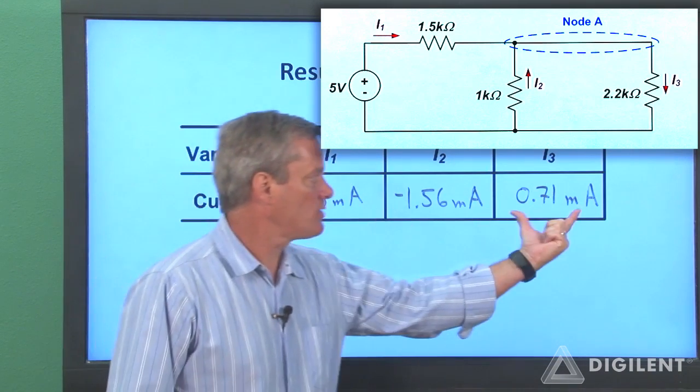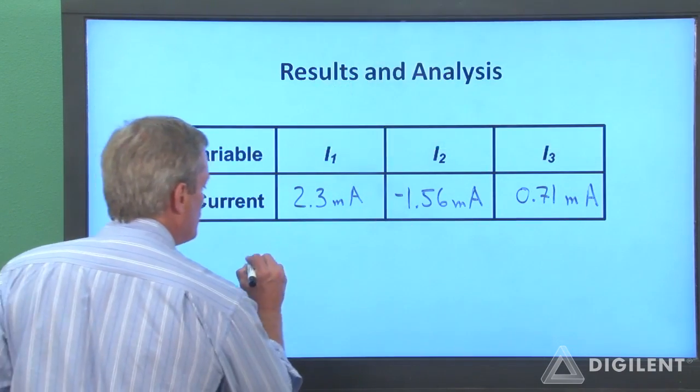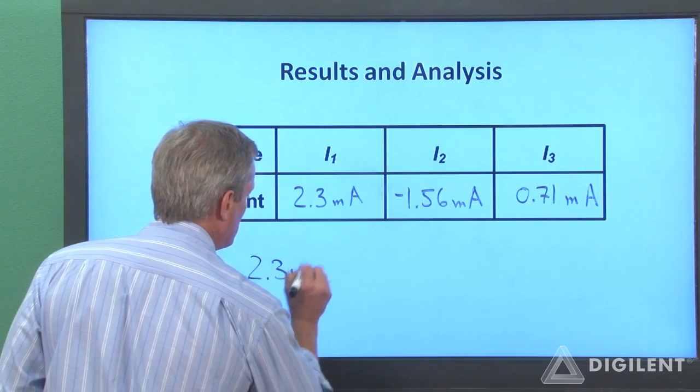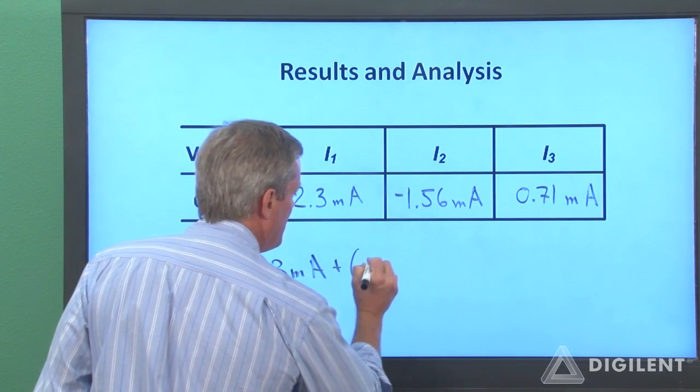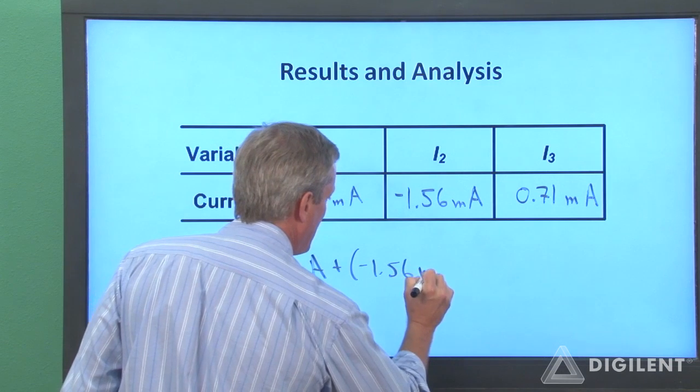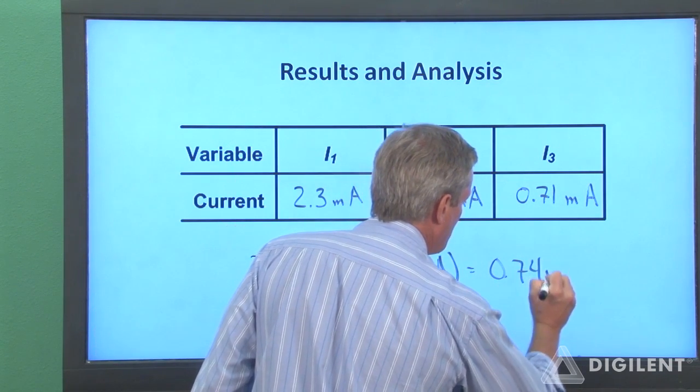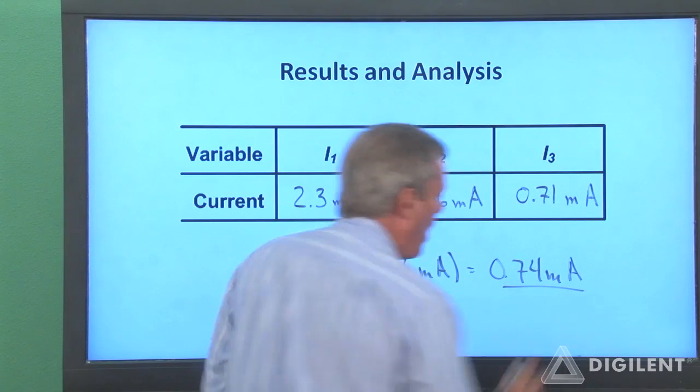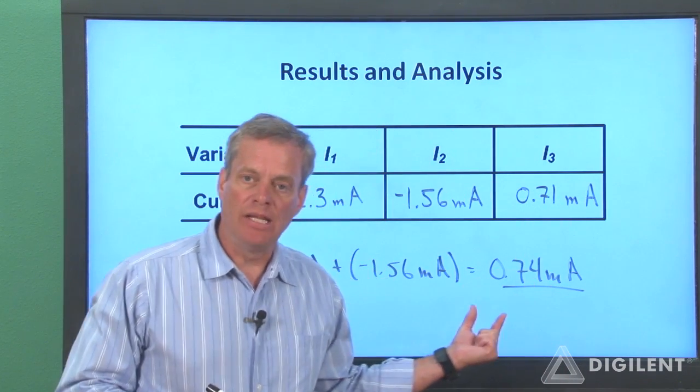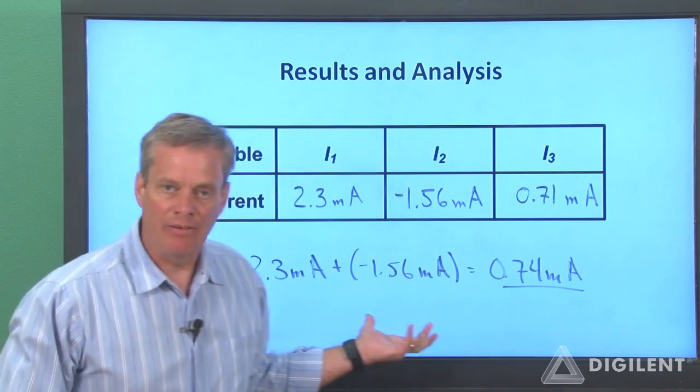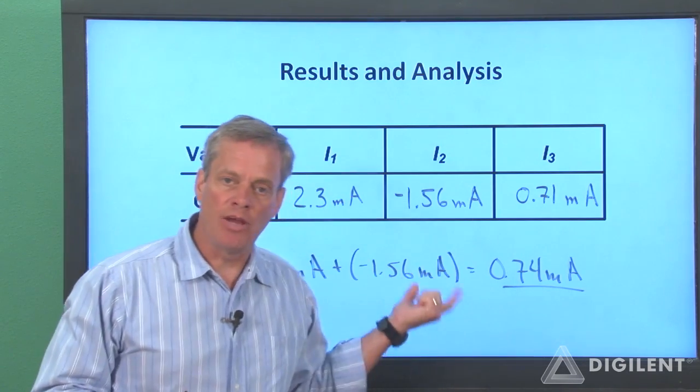So if we add this and this, we should get this. 2.3 milliamps plus a negative 1.56 milliamps actually turns out to be 0.74 milliamps. So we're off by about 0.03 milliamps, which is probably insignificant considering the accuracy of our measurements.